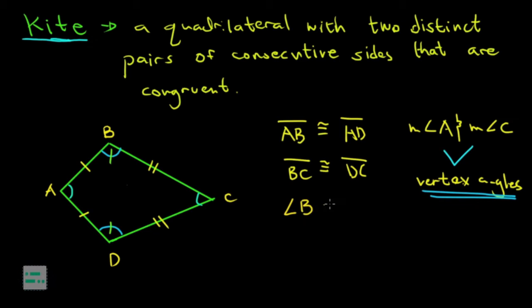Pwede kong idagdag dito na si angle B ay congruent kay angle D because they are opposite angles but non-vertex. Kasi kapag vertex angles kagaya ng A and C, hindi dapat parehas ng sukat. Mahalaga ding tingnan ang perpendicular na diagonals ng kites. Perpendicular meaning pag nag-intersect sila may mabubuong 90 degree angle.